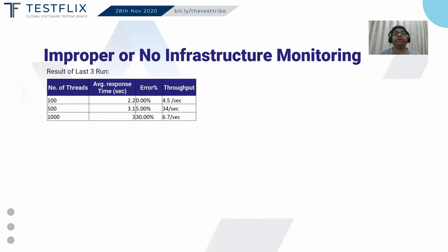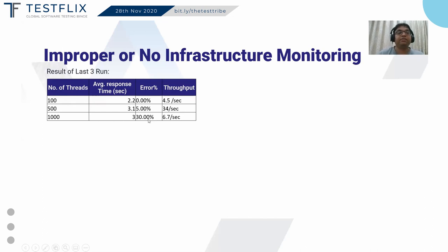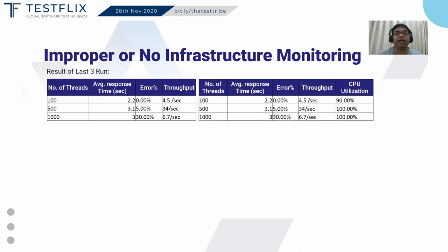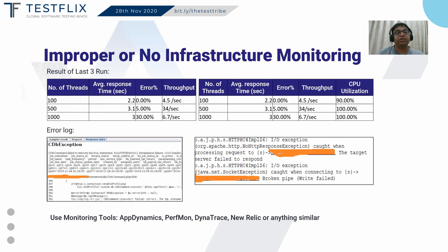Another mistake is improper or no infrastructure monitoring. For example, with 100 users the average response time was 2.2 seconds, with 500 users it was 3.1, and with 1000 users it dropped to 3.0 — but the error rate was 5% at 500 users and 30% at 1000 users. Adding CPU utilization data reveals that with 100 users CPU was at 90%, and with 500 users it reached 100%. Once CPU hits 100%, you should stop testing, check your infrastructure, and scale it. Use tools like AppDynamics, New Relic, Dynatrace, etc. for proper infrastructure monitoring.